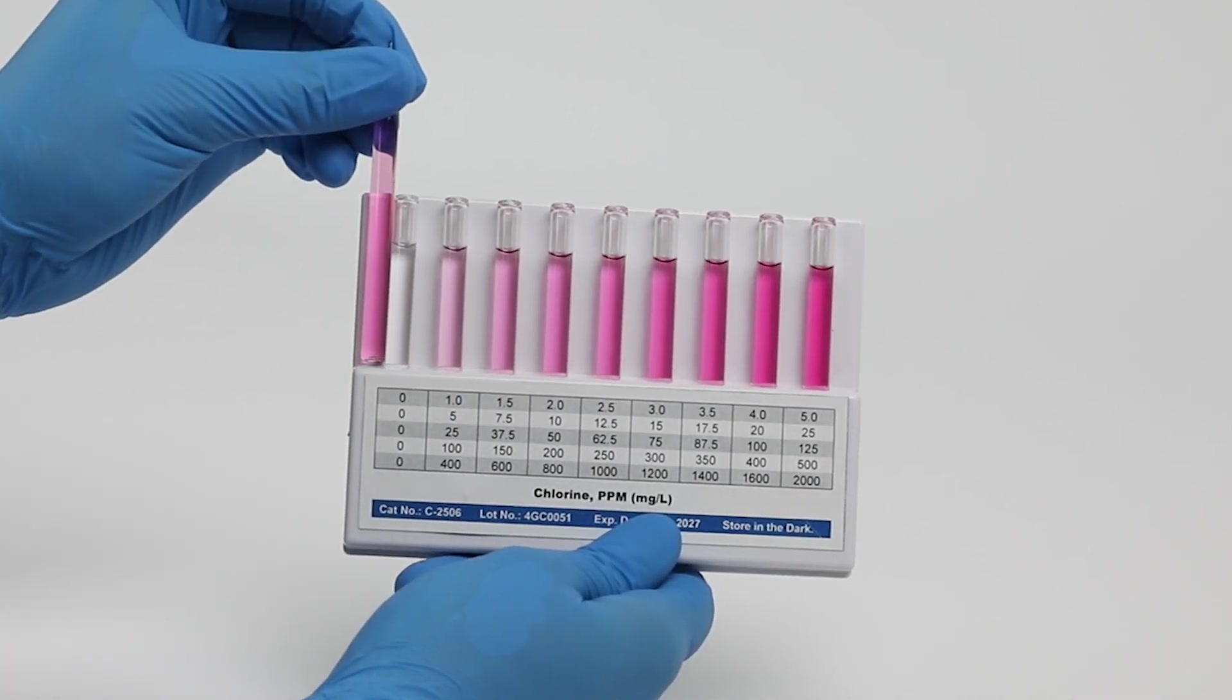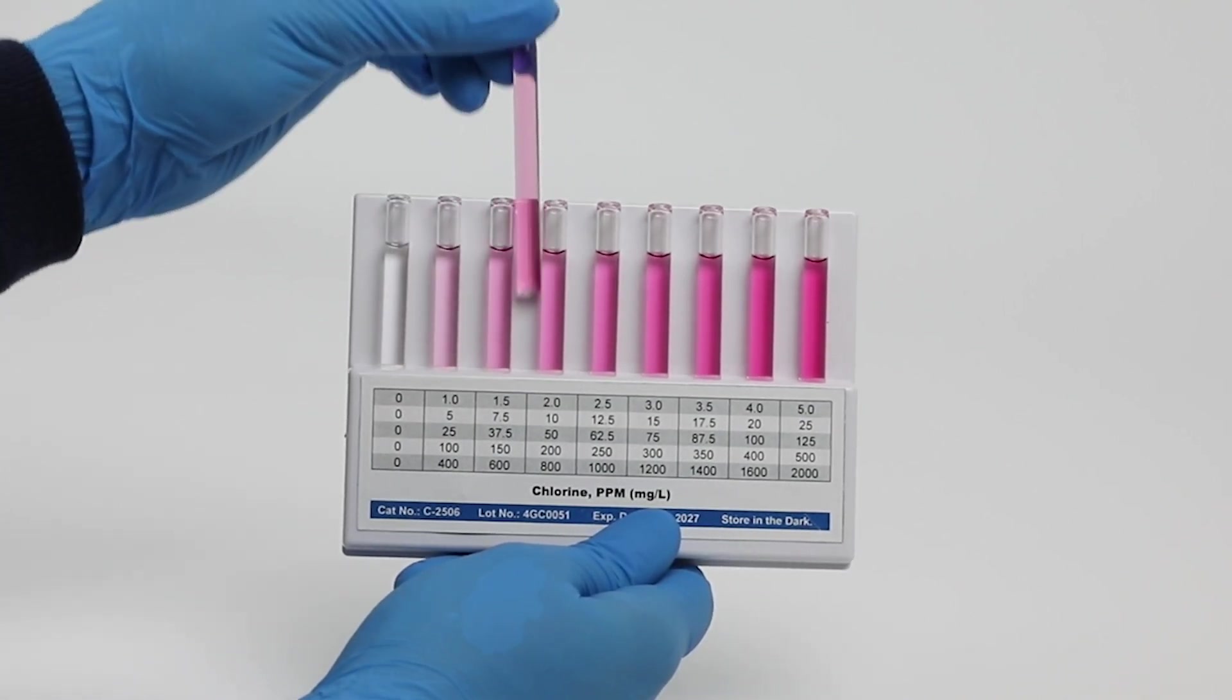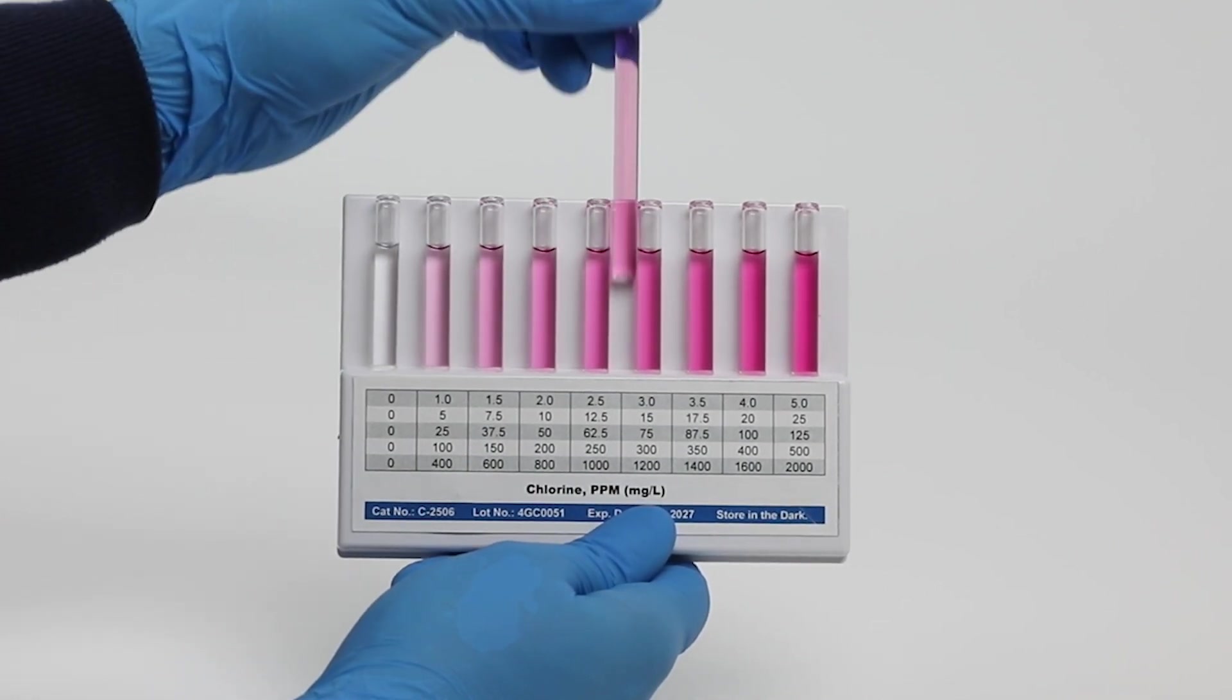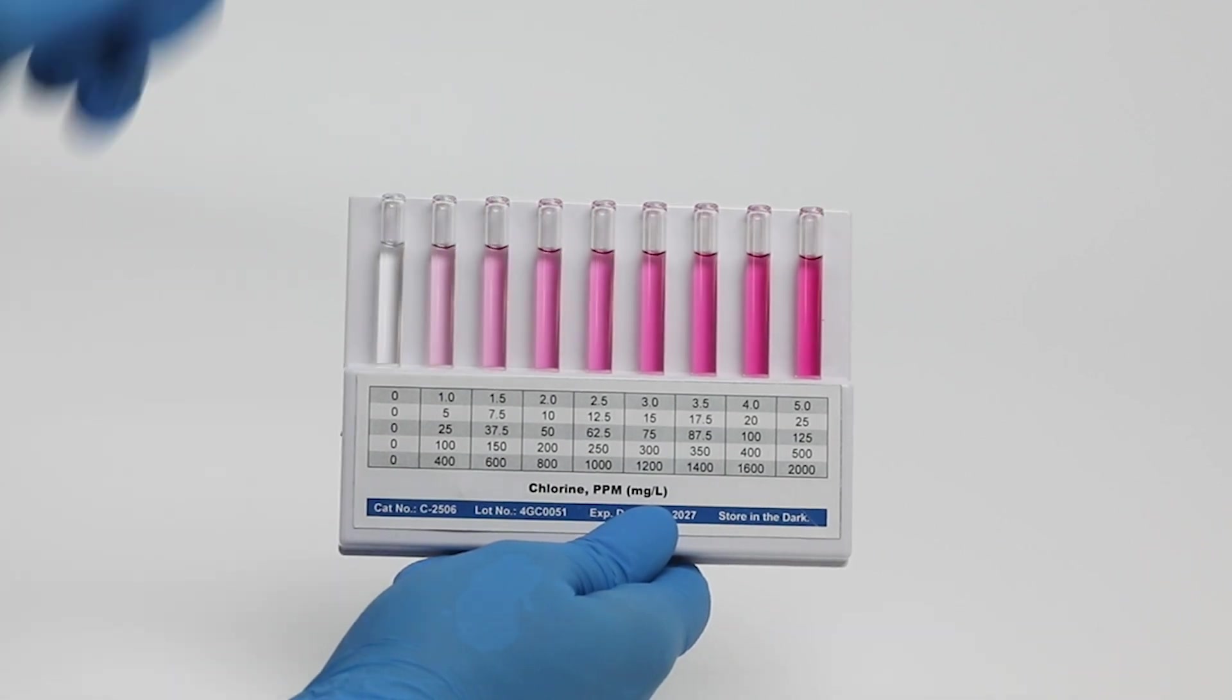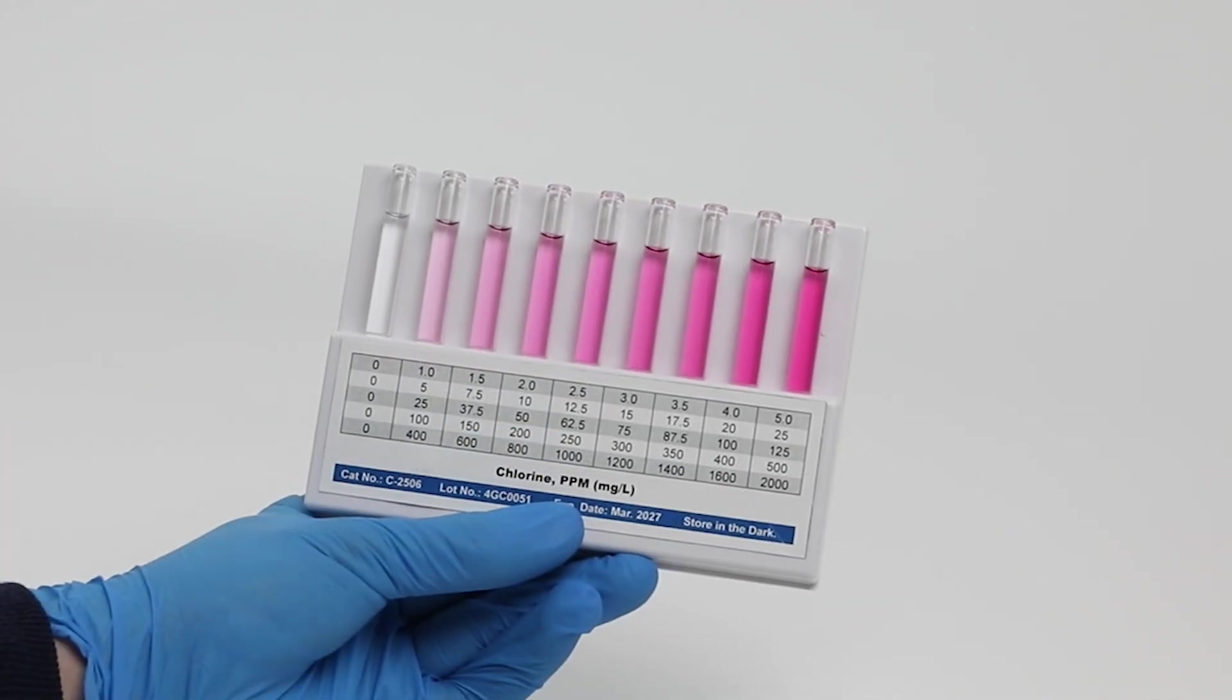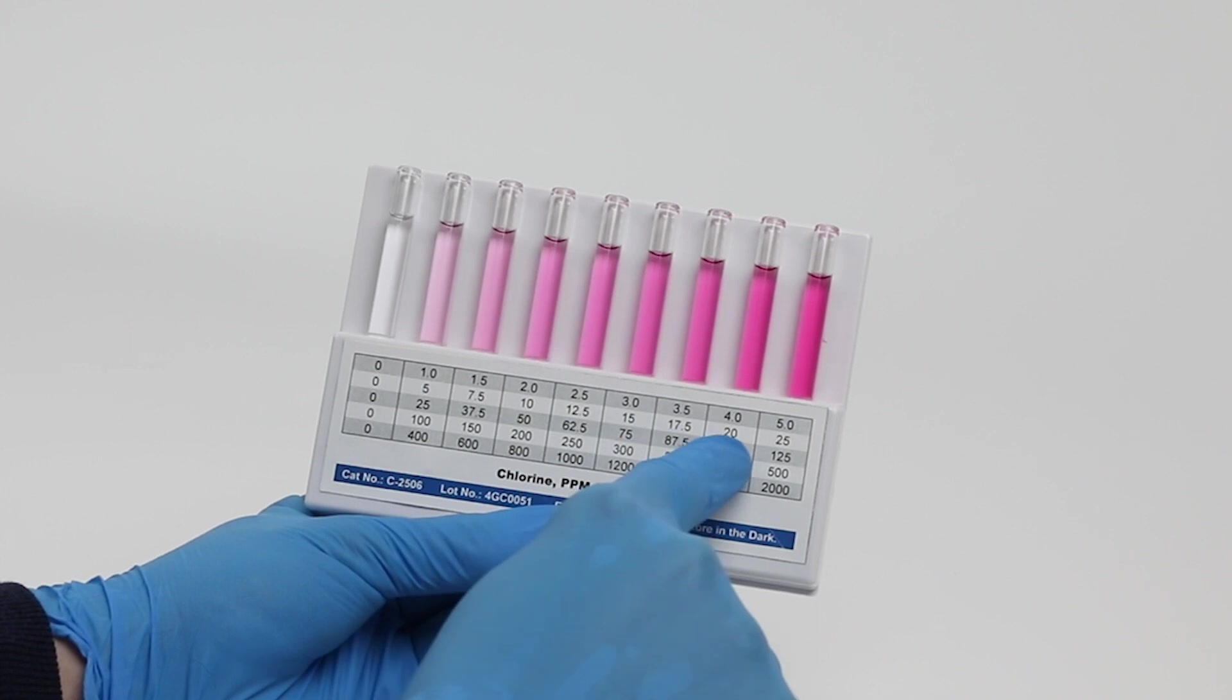We recommend you start at the lowest color standard and move the test in the direction of increasing intensity. When you think you have a match, check one color standard beyond just to be certain. To obtain a test result, use the specific concentration scale designated in the test kit instructions. On the designated scale, the test result is the number printed below the color standard chosen for best color match.